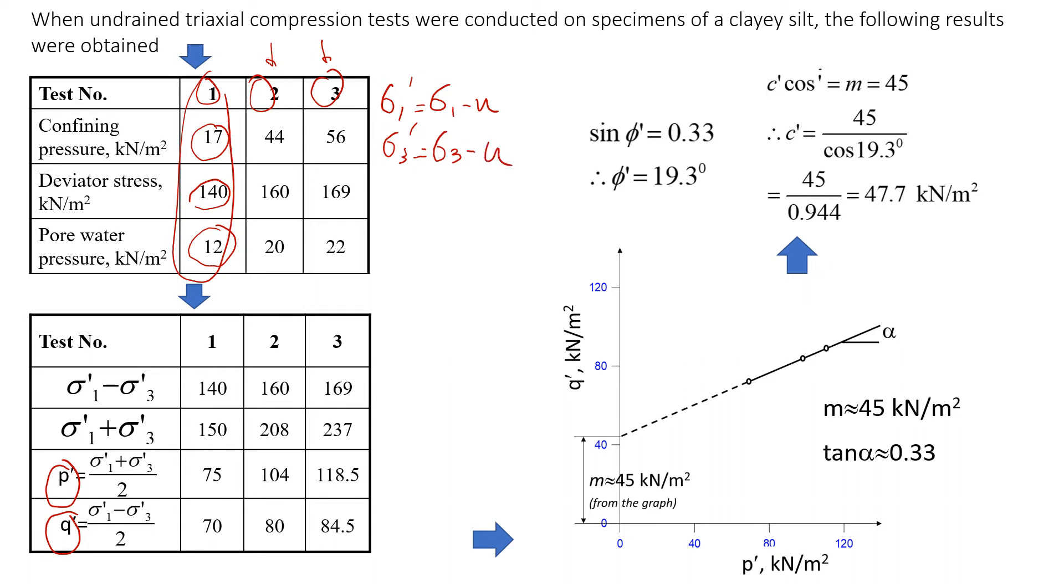I have already prepared the answers. You will see 75 and 70 for the first test. I'm going to show how I obtain these values, and later on you can practice for test 2 and test 3. Let's start with sigma 1. We're going to find sigma 1. In this case sigma 1 is sigma 3, which is confining pressure, plus the deviator stress.